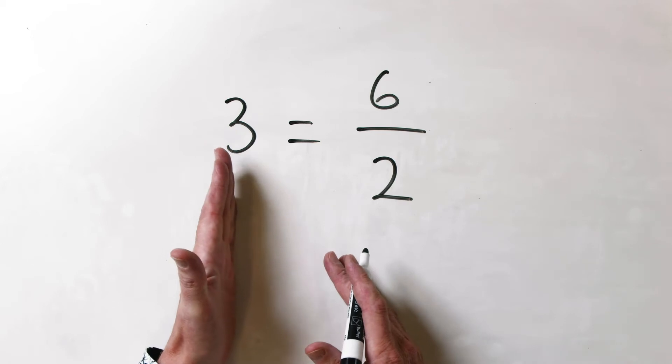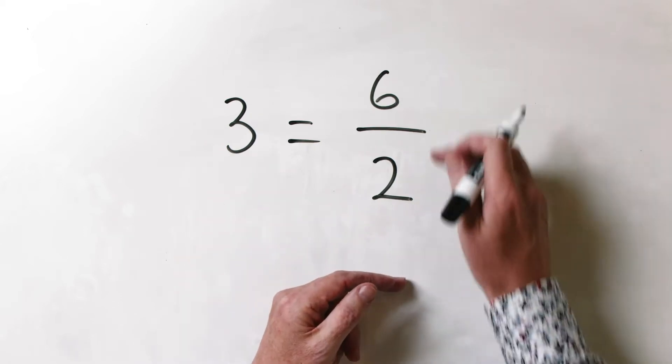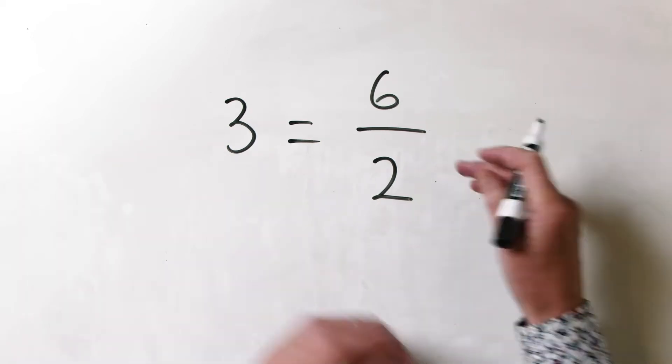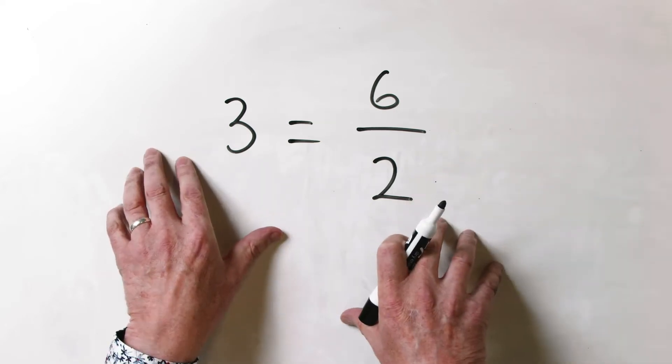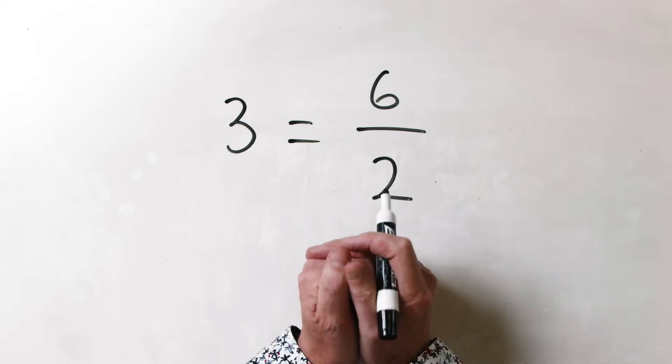What have we got on the left-hand side? We've got 3. What have we got on the right-hand side? 6 divided by 2. 6 divided by 2 equals 3. Left-hand side 3, right-hand side 3. We've got an equal sign there. It's all good. You're used to that. You've been using these since the first time you went to school.